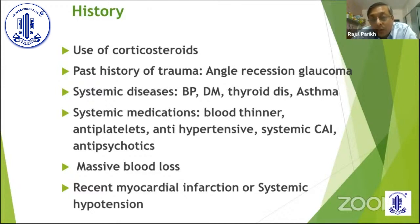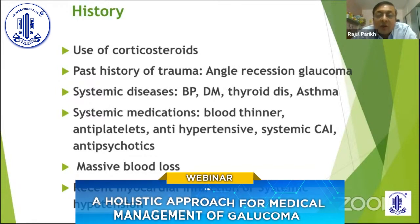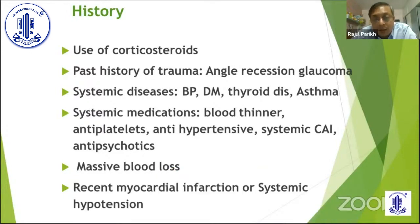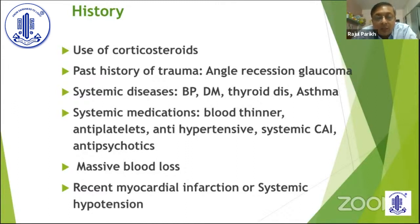A minor history of trauma can also lead to angle recession. Systemic disease matters too — there are drugs which can affect glaucoma management, like systemic antihypertensive beta blockers, which can mask the IOP because up to 70% IOP reduction can happen in patients taking systemic beta blockers. Patients on blood thinners present issues for surgical planning. Massive blood loss and severe hypotension can cause one-time optic nerve damage. So all these things are very important.